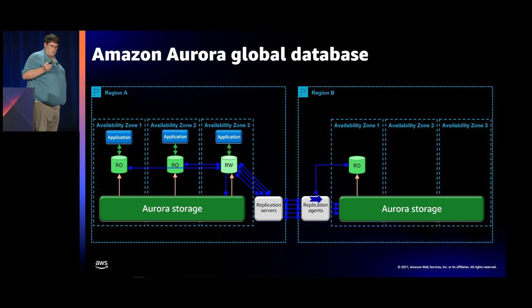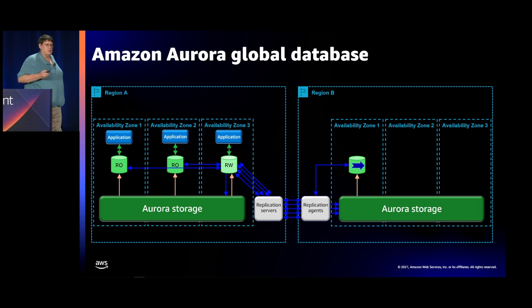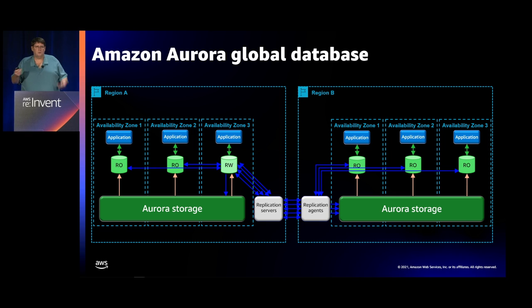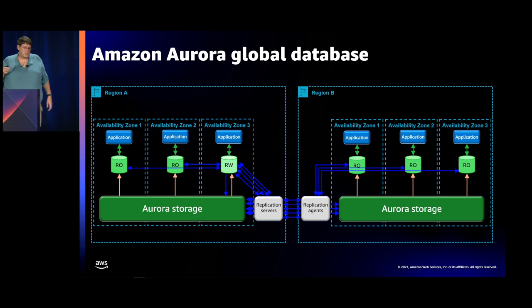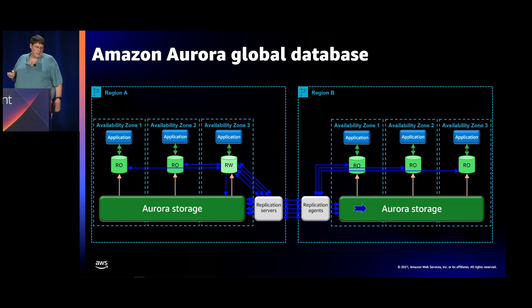When a change comes through, it goes to the read replica, invalidates the cache if there's a matching page, and simultaneously updates the storage tier. You can spread read replicas across the remote region and run read queries there, usually to reduce latency and to take advantage of the DR solution you've already paid for. Changes continue replicating across the Amazon backbone into the remote storage fleet.